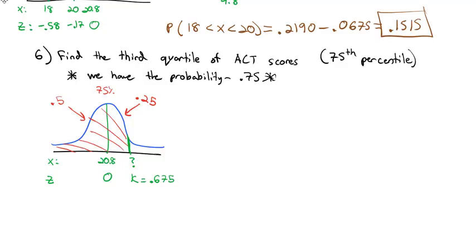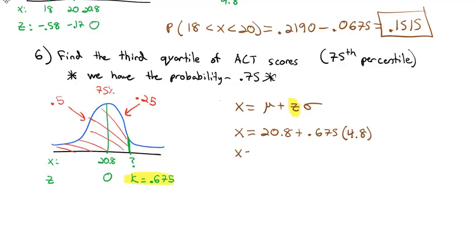To find the x value, we use the formula: x equals the mean plus z times the standard deviation. The z value is 0.675, so x equals 20.8 plus 0.675 times 4.8, which equals 24.04. The third quartile of ACT scores is about 24, meaning a score of 24 is better than about 75% of all ACT scores.